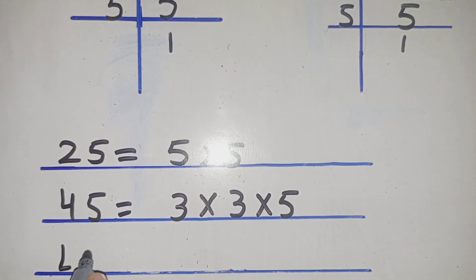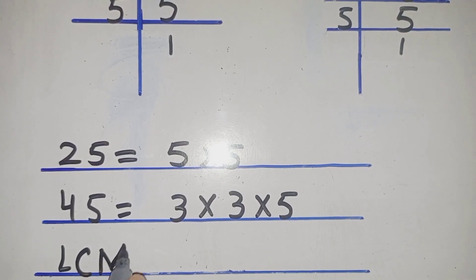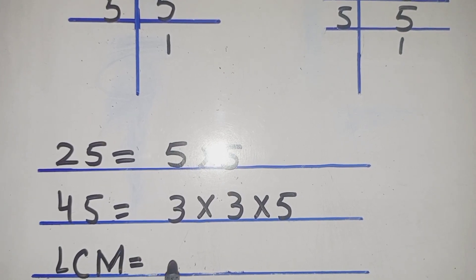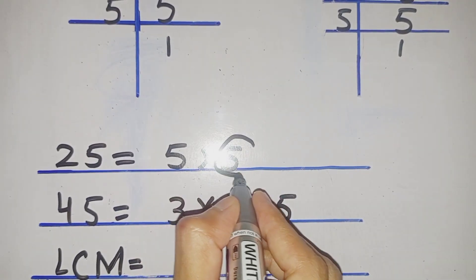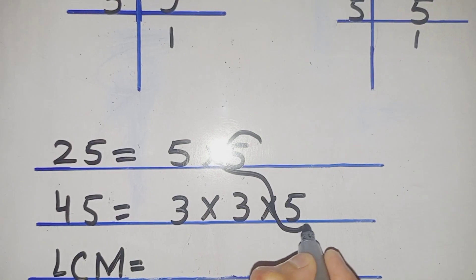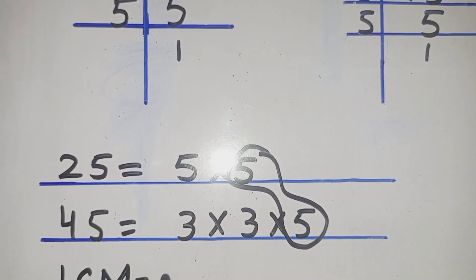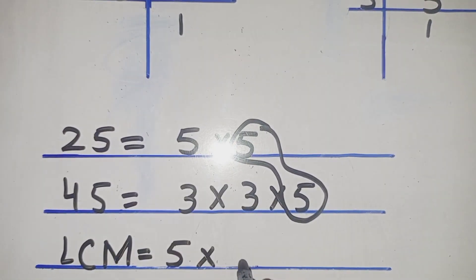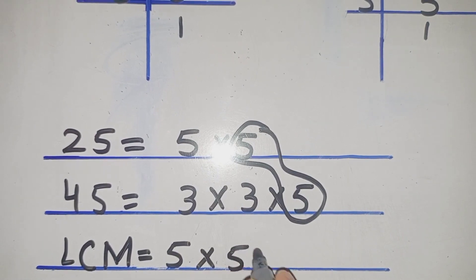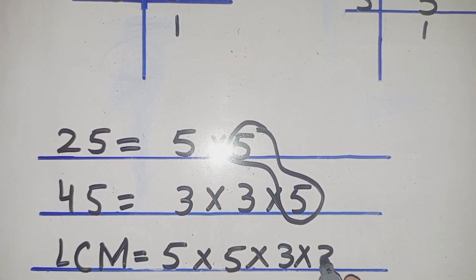LCM is equal to — first, what is common in both numbers is 5, so we take 5 first — multiply by 5 multiply by 3 multiply by 3.